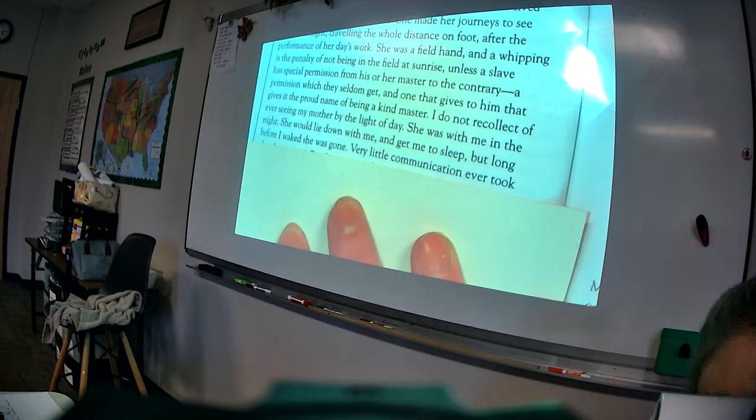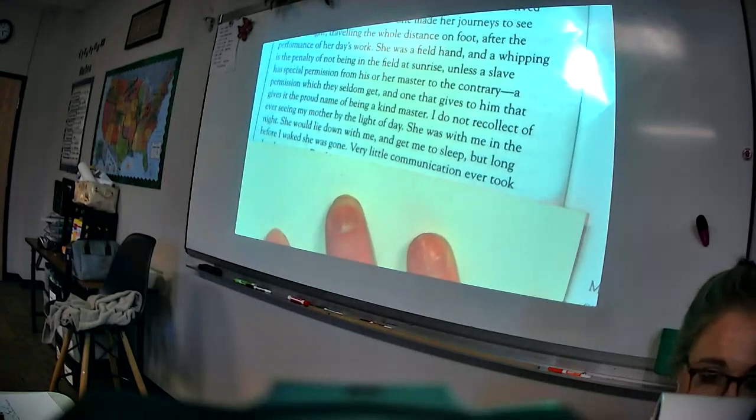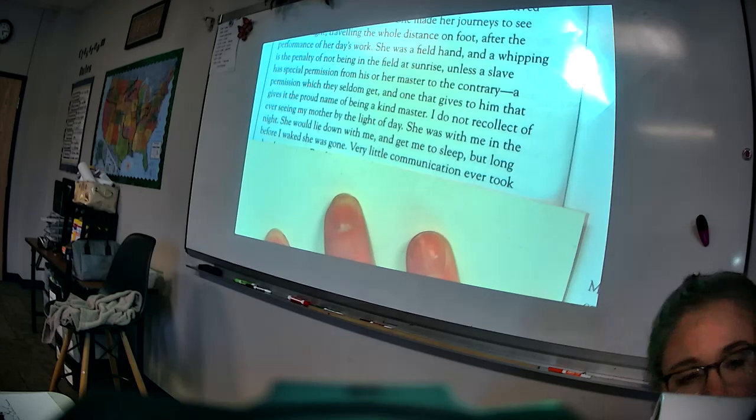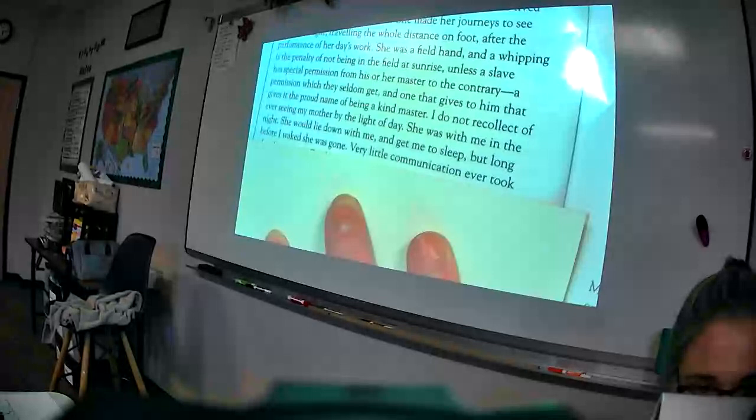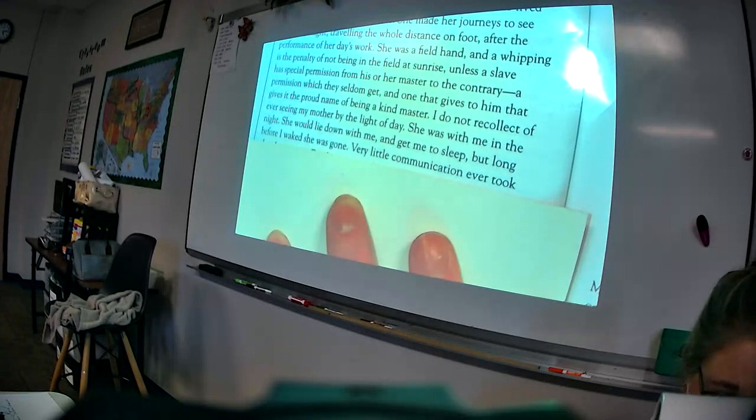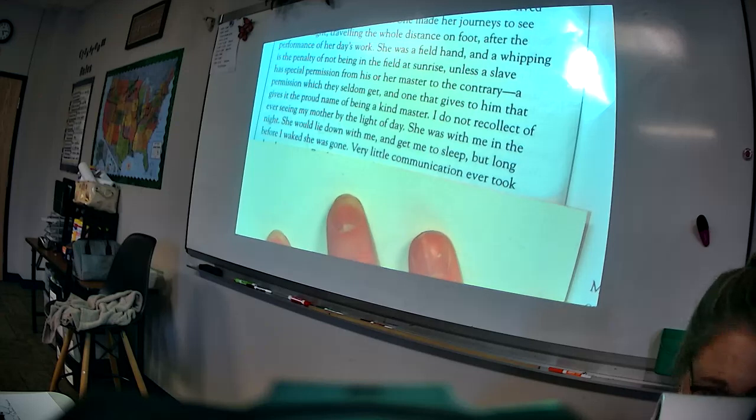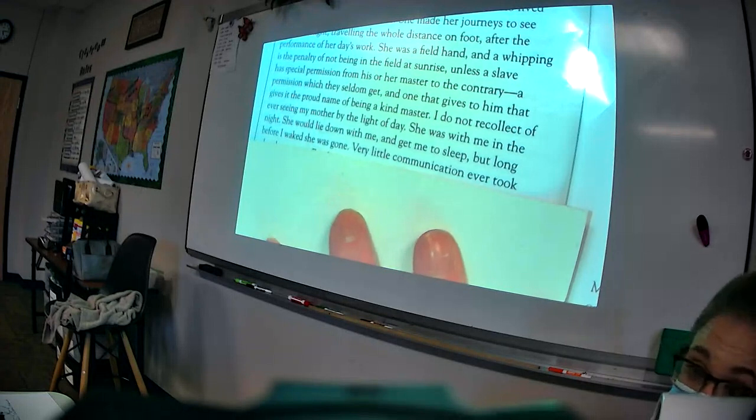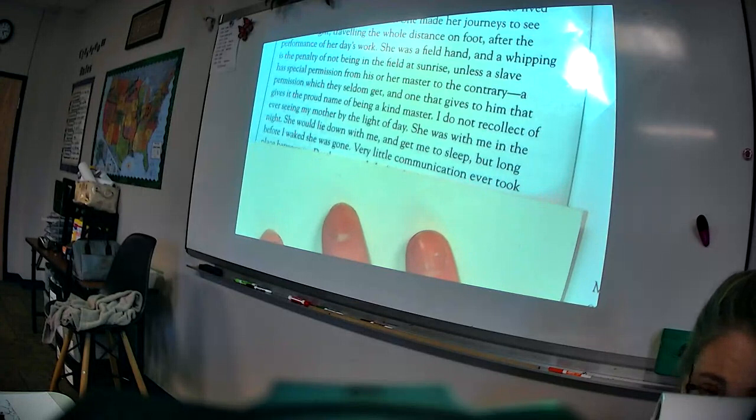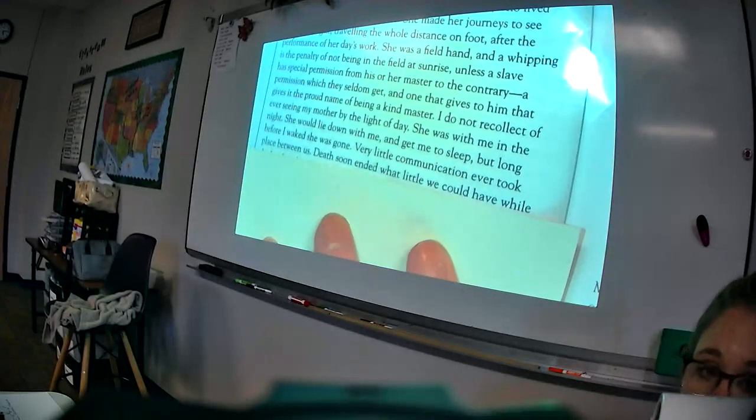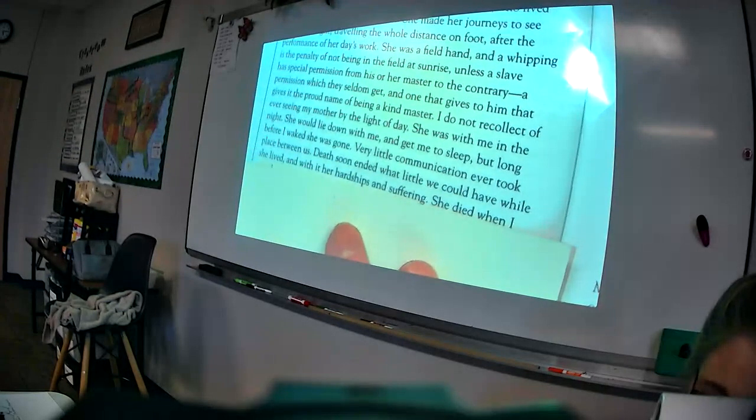I never saw my mother, to know her as such, more than four or five times in my whole life. And each of these times I did see her was very short in duration, and it was at night. She was hired by a man named Mr. Stewart, who lived about 12 miles from my house. She made her journeys to see me at the night, traveling the whole distance on foot, all 12 miles, after the performance of her whole day's work. She was a field hand, and a whipping is the penalty of not being in the field at sunrise, unless a slave has special permission from his or her master on the contrary. A permission which they seldom get, and one that gives to him that gives it the proud name of being a kind master. I do not recollect of ever seeing my mother by the light of day. She was with me in the night. She would lie down with me and get me to sleep, but long before I woke up, she was gone. Why would she leave so early in the morning? Matthew? Excuse me, one, she would leave really early in the morning so she could get back. She had to get back before sunrise, or she'd be whipped. And she was walking 12 miles on foot. And at night.